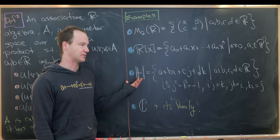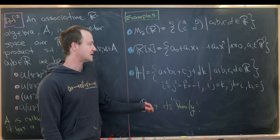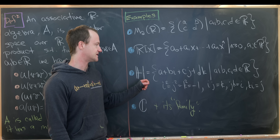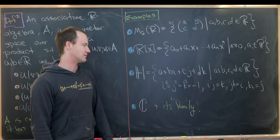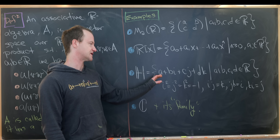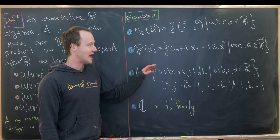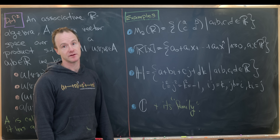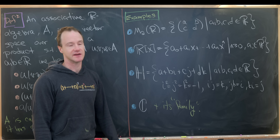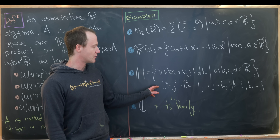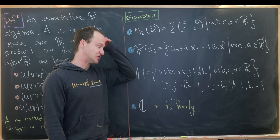Our next example, which is pretty interesting, is called the quaternions. That's going to be all linear combinations of the number one and then these imaginary numbers i, j, and k. So in other words, it's of the form A + Bi + Cj + Dk, where A, B, C, and D are real numbers. This is another four-dimensional vector space, just like the matrix example. We've got a rule for the multiplication of i, j, and k.